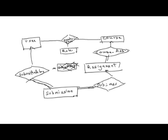A question from chat: why is there no double line between participant and course (between user and the participant relationship)? It depends on whether you want to allow users to register with Moodle before being enrolled in any course. Moodle does allow this — you can first log in and register, and later be enrolled. Since a user can initially not be enrolled in any course, there is no double line on the user side of the participant relationship.